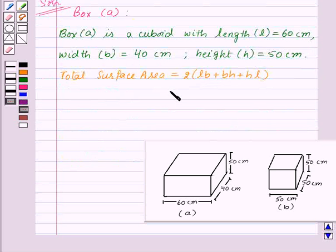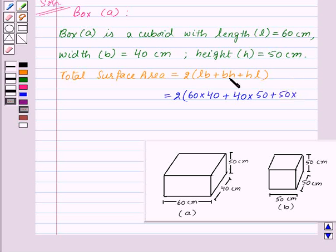Now we will substitute the values. Now L, that is length, is equal to 60 cm, so 60 × B, that is 40, plus B, that is 40, × H, height 50, plus height 50 × L, that is length 60.